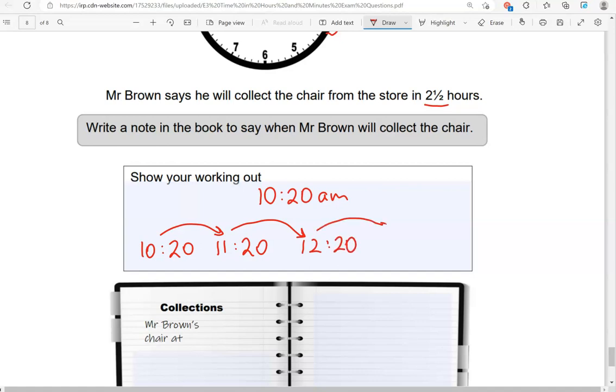If we add 30 minutes, which is half an hour, that will be 12:20 and 30 gives us 50. So that is 12:50. It's after midday, so this is PM.